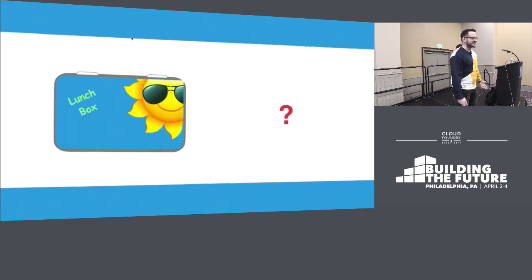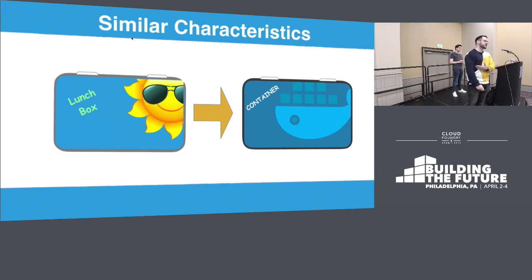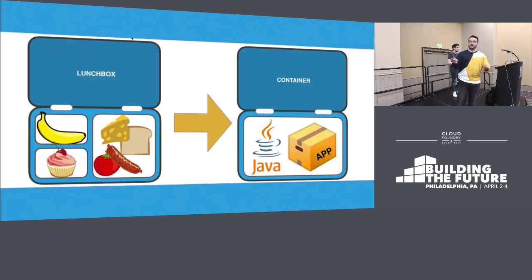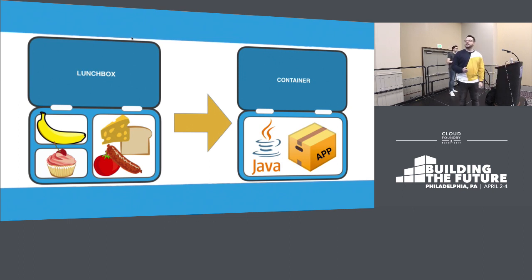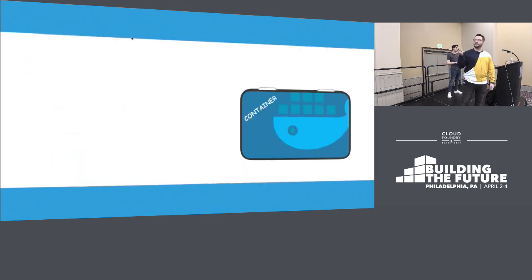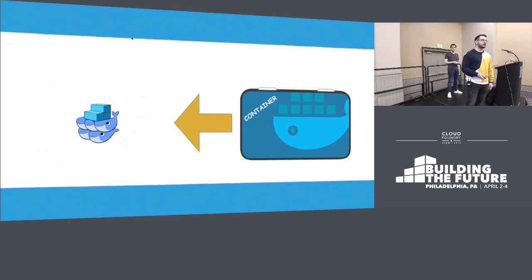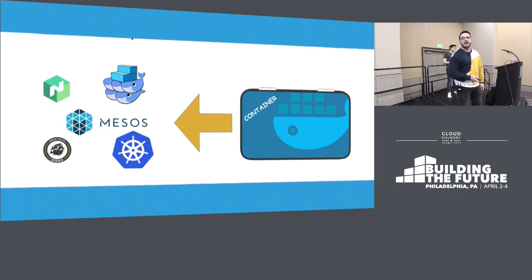Why do I talk about lunchboxes? The characteristics can be easily applied to containers that we run in the cloud. They're lightweight, they provide isolation, they're portable. And just as you package your lunch into a lunchbox, you can package your app into a container with the runtime and everything you need to actually run the app. When you have an image, you can run that container on your personal machine, on Kubernetes, on Docker Swarm, or any other container orchestrator on the market. And this is where you have to make a decision: which container orchestrator do you want to use?